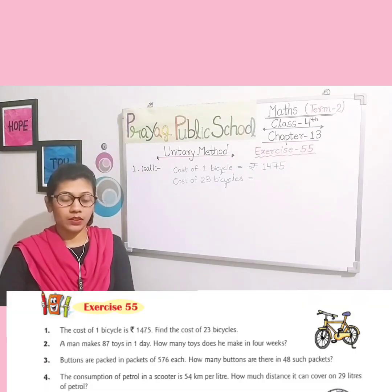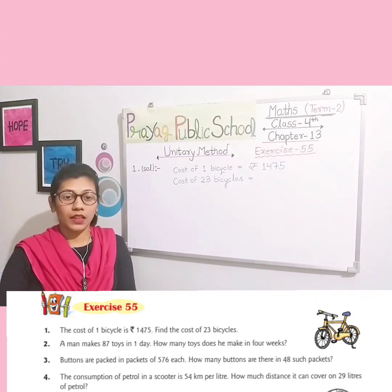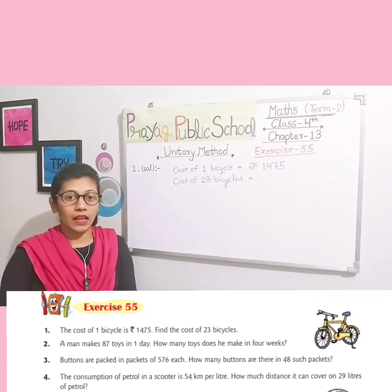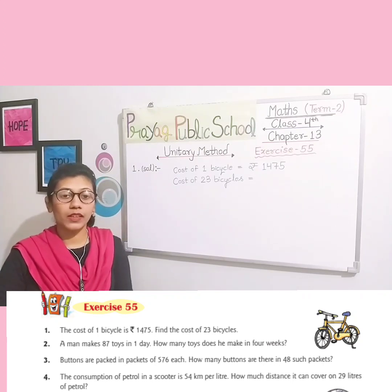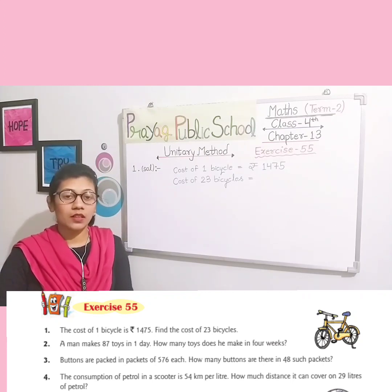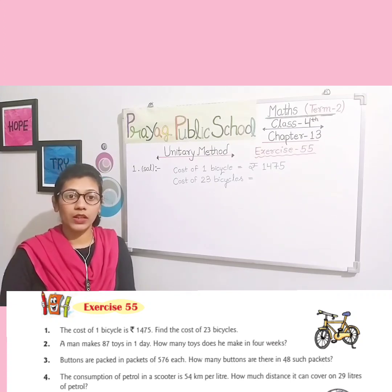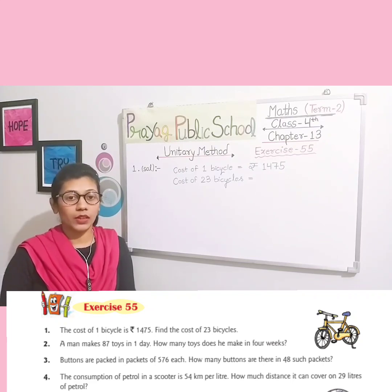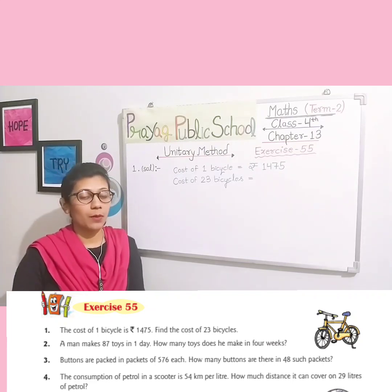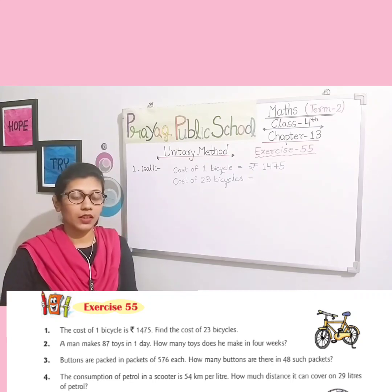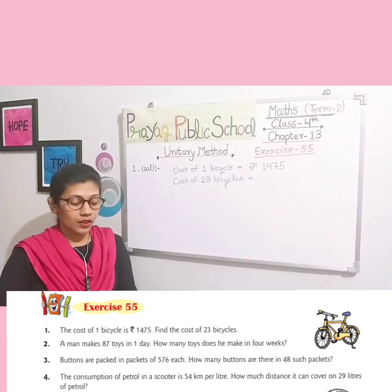Open page number 212, Exercise 55. We take question number one first. Before the exercise, whatever solved examples are in your book, you have to practice those sums in your rough copy or practice copy. You will read them, understand them, and practice them. Now let's take question number one — listen to the question carefully.